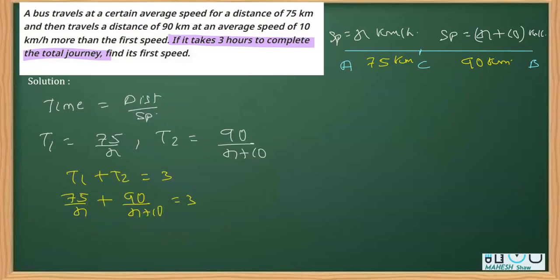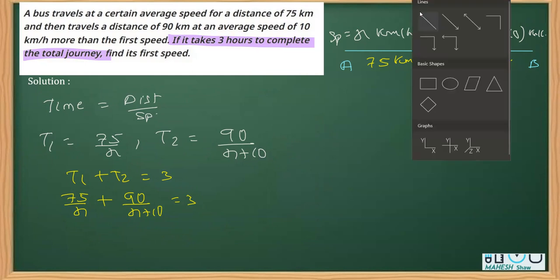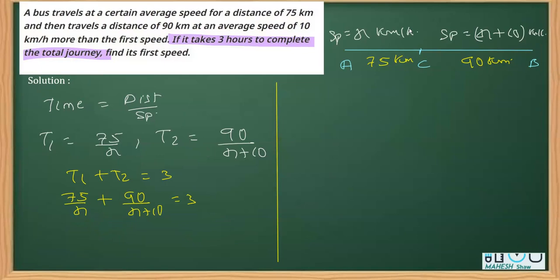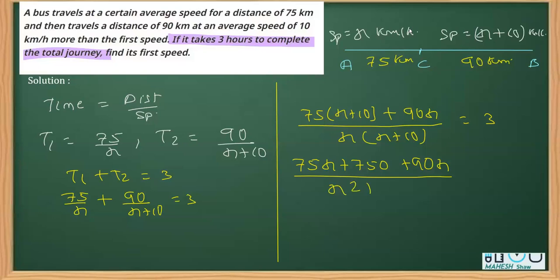Now we have to convert this into a quadratic equation, so for that we'll be taking LCM. The LCM is going to be x multiplied by x plus 10. So this will come as 75 times x plus 10 and this will come as 90 times x, that equals 3. With further solving, it is 75x plus 750 plus 90x divided by x square plus 10x equals 3.